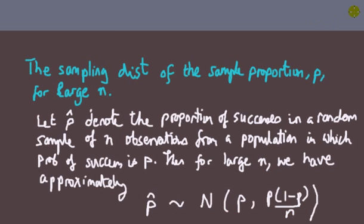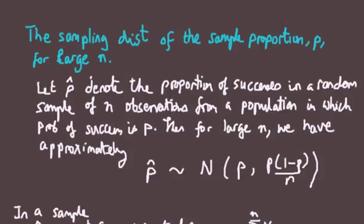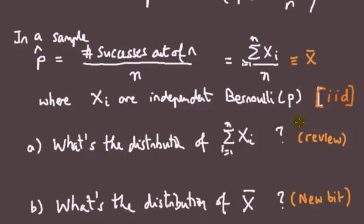Let p-hat denote the proportion of successes in a random sample of n observations from a population in which the proportion of successes is p. For large n, we have approximately that the sample proportion is normally distributed — that's the mean, that's the variance. This is the result you all know, and we can use it for hypothesis testing and confidence intervals. Note that this result is approximate and holds using the central limit theorem.